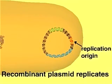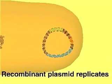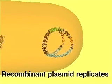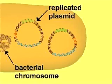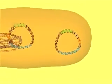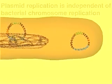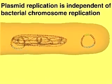The replication origin allows the plasmid to replicate by using the host cell's enzymes. Plasmid replication is independent of host cell division, but plasmids are distributed to each daughter cell when the host cell divides.